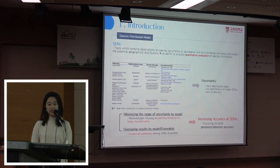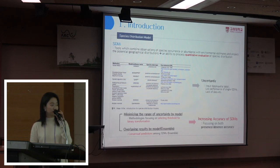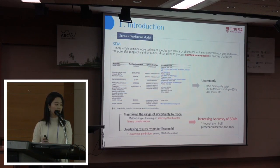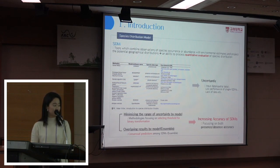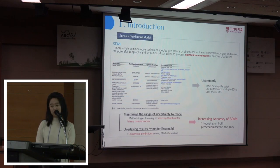More specifically, it can be divided into two concepts: minimizing the range of uncertainty by model, and overlaying results by model. For the first one, it can be explained by methodologies focusing on selecting thresholds for binary transformation. And for the second one, it can be explained by consensual predictions among SDMs.